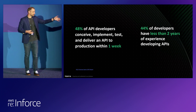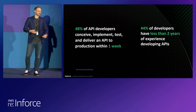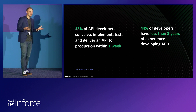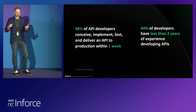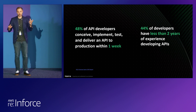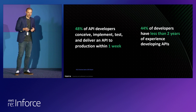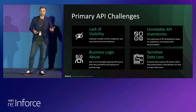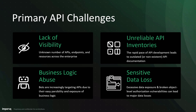The downside is that 44% of API developers also have less than two years of experience developing APIs. As a security team, you're now in this position where you have to secure the organization, but your developers are really new to this. A lot of the challenges we hear when talking to CISOs start with a lack of visibility — this rapid pace of development means your APIs are changing all the time. On top of that, business logic abuse is one of the biggest attack vectors for APIs in particular.